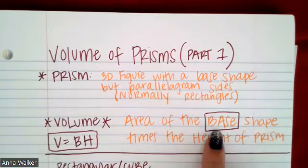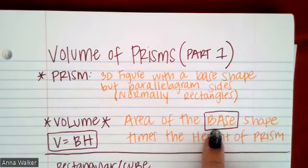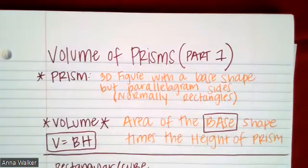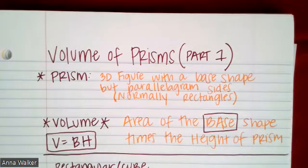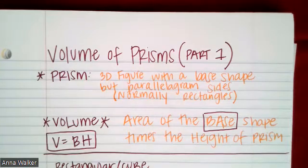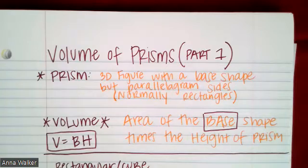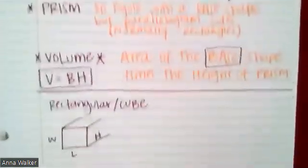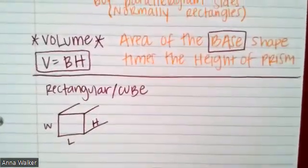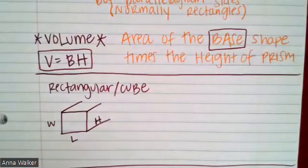You might be thinking: what is the base shape? It depends on the type of prism. You may have heard of a triangular prism, a rectangular prism, a cube — which is a form of a prism — and a cylinder, which is also a special form of a prism. The name of the prism tells you what the base shape is. The first one we're going to look at is a rectangular prism or a cube.